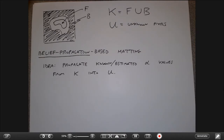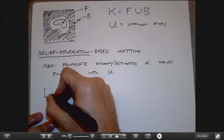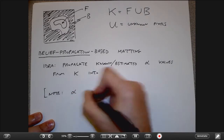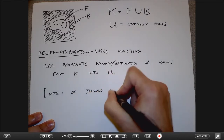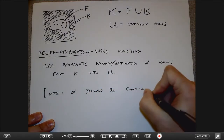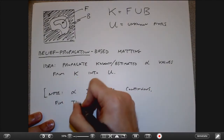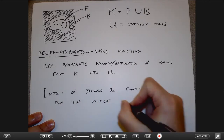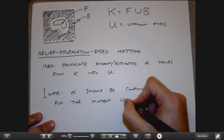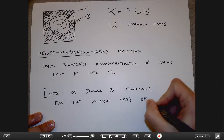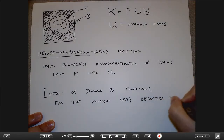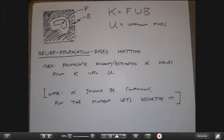Belief propagation is a very commonly used algorithm in computer vision, exactly set up for this kind of energy function. To make it easier, while alpha should be continuous, let's think of it as discrete. The way this works is that every vertex has an evolving probability distribution function for what its alpha should be.